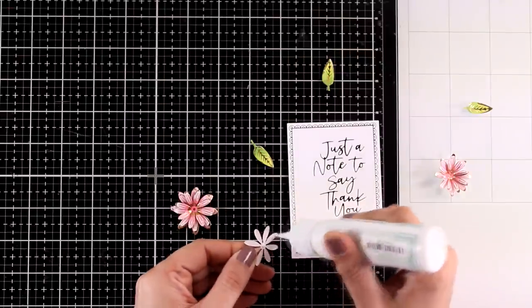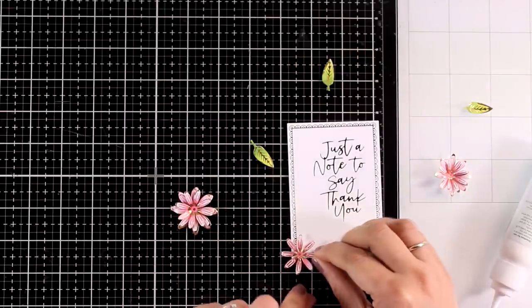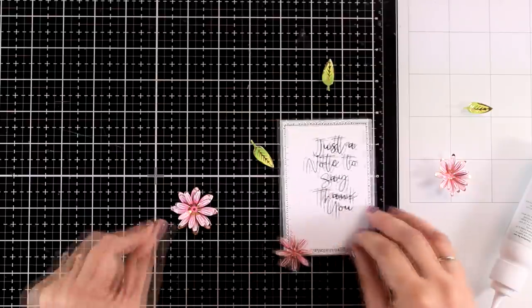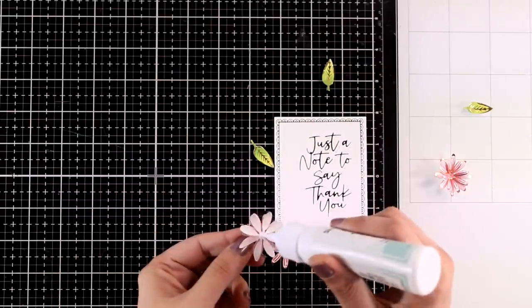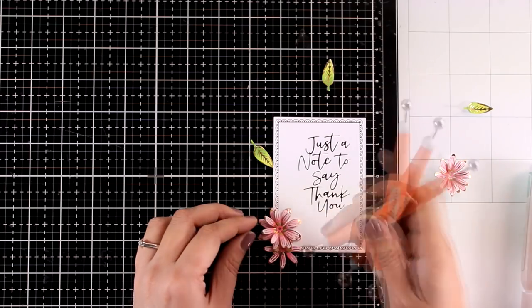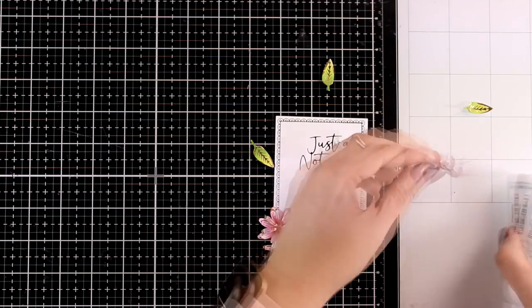And let's put the card together. I did use a rectangle die to cut out that panel. The one layer flower is going at the bottom and then it's just a matter of arranging the other two flowers on top of that.